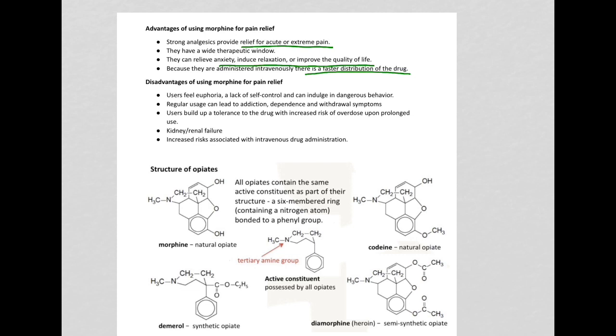The disadvantages of using morphine for pain relief include addiction. Also, as the person is under the influence of the drug, they can lack self-control and indulge in dangerous behaviors. The user will also build up tolerance to the drug, which means higher and higher doses will need to be taken to feel the same effect.